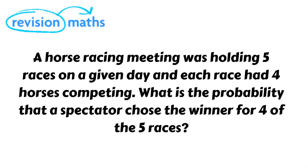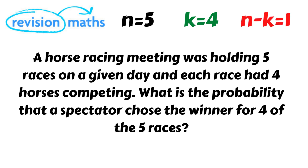So now let's break down the question. We know that the spectator guesses on all five races, so we use the term n to represent this — n equals five. The question asks for the probability that the spectator chooses the winner in four of the five races, so K equals four, representing the number of correct picks. We know the spectator gets one winner incorrect, so n minus K equals one.